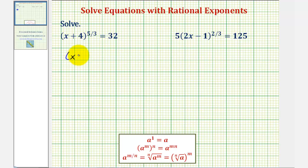So we have the quantity x plus 4 raised to the five-thirds power equals 32. But now if we raise both sides of the equation to the power of three-fifths, which again is a reciprocal of five-thirds.